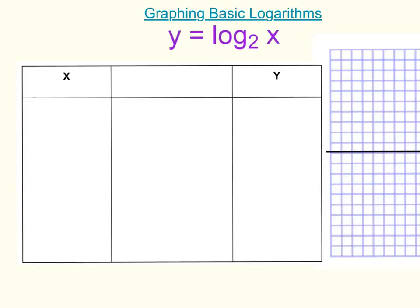So we are going to make an x-y table. A couple things to remember: the logarithmic function is the inverse function of the exponential function. So the exponential function would be like y equals 2 to the power of x, and since it's the inverse function, we switch x and y. So we're going to think about it as 2 to the power of y equals x.